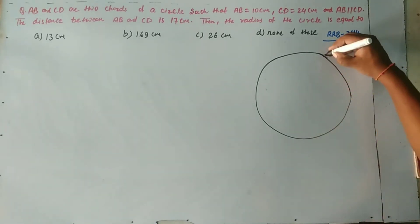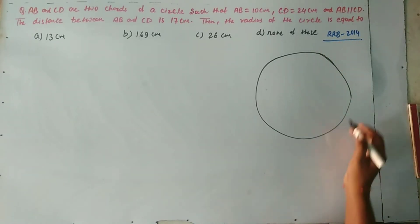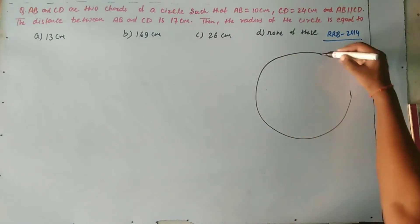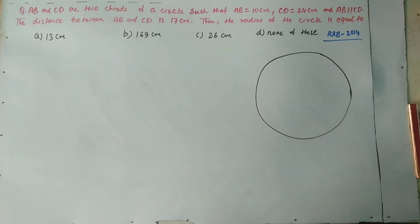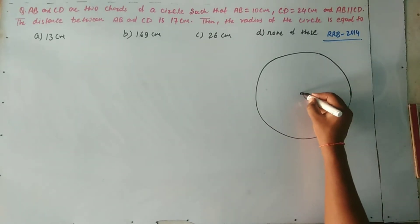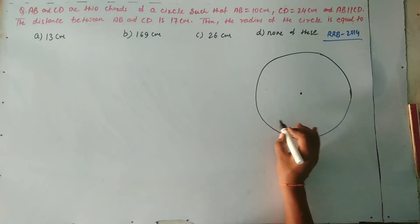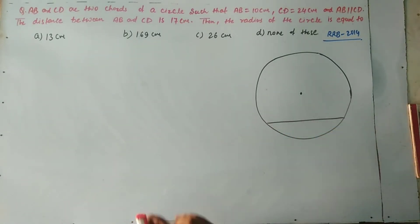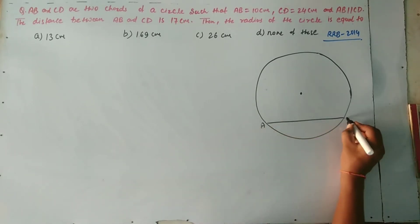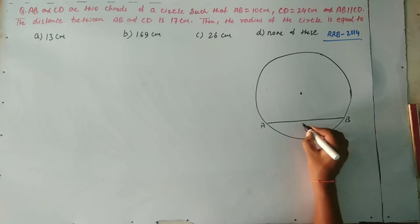यह हमारा circle है। Circle हमने draw किया और यह circle का केंद्र है। अब question में बताया जा रहा है कि उसका एक chord है — AB equals to 10 cm — यह हमारा 10 cm का chord है।